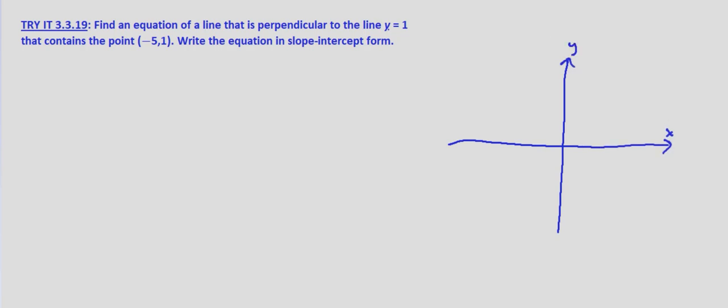We're given y equals 1. Well, that's a horizontal line at y equals 1. And we're told that our perpendicular line contains the point negative 5, 1. So this is negative 5, 1.